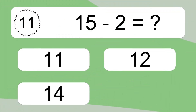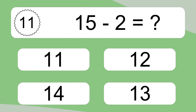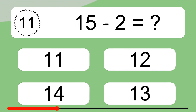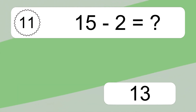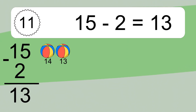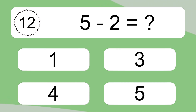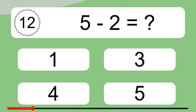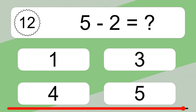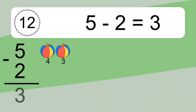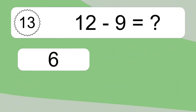15 minus 2 equals what? 15 minus 2 equals 13. Let's count it: 14, 13. 5 minus 2 equals what? 5 minus 2 equals 3. Let's count it: 4, 3.